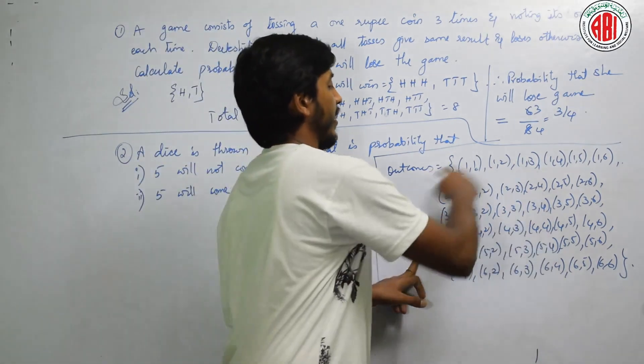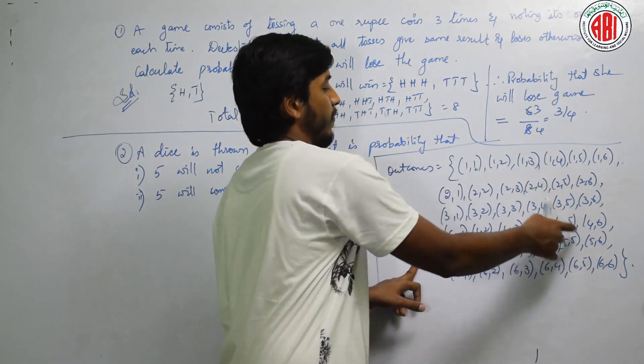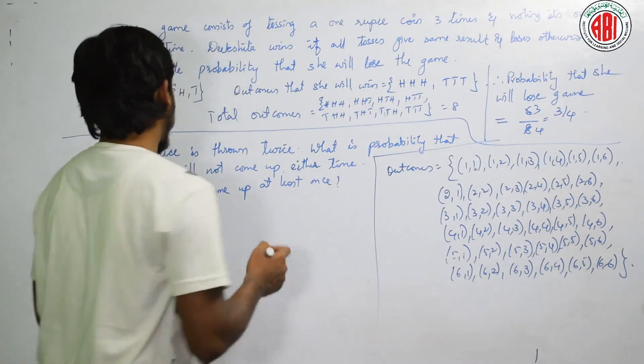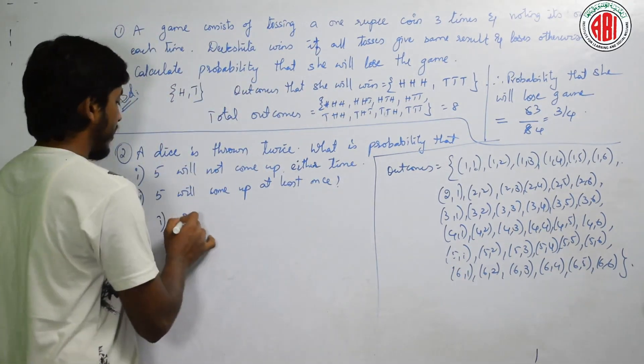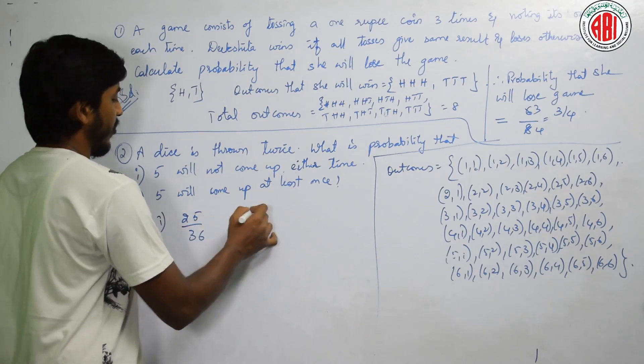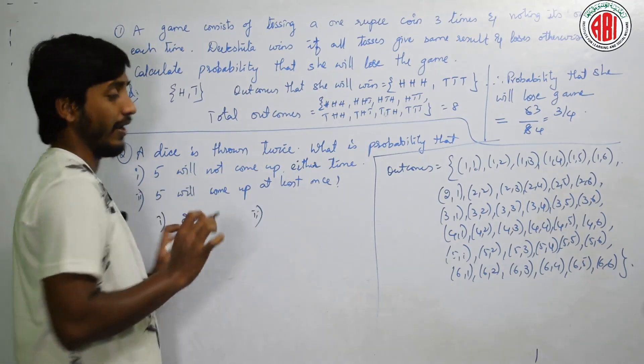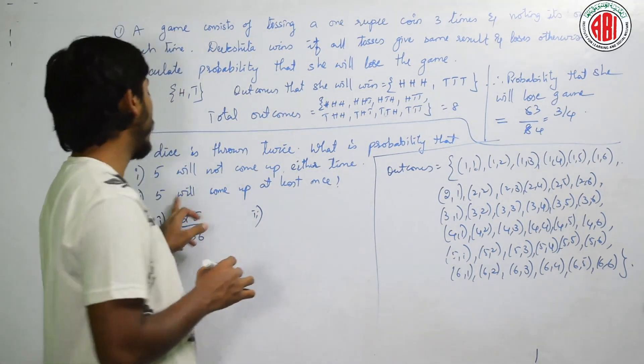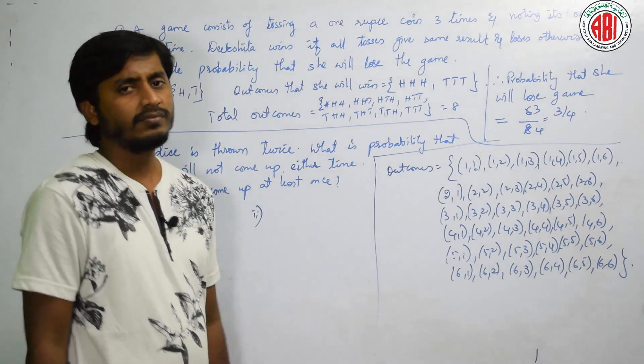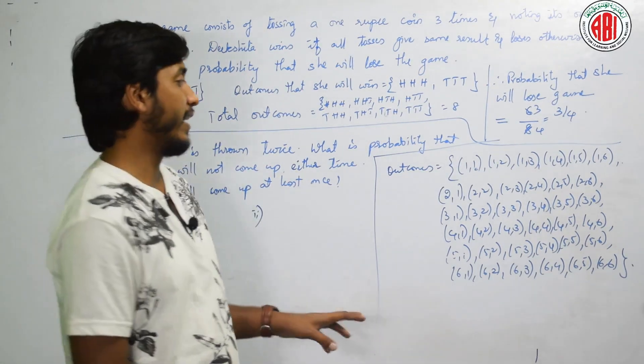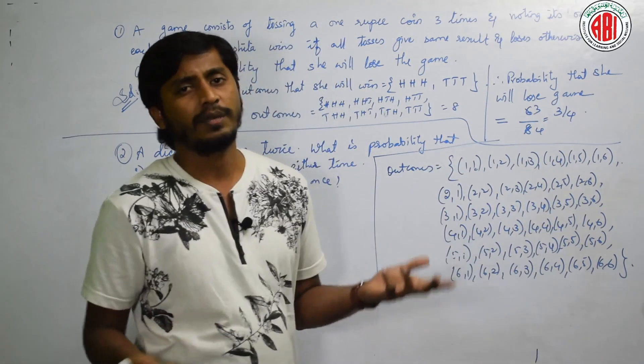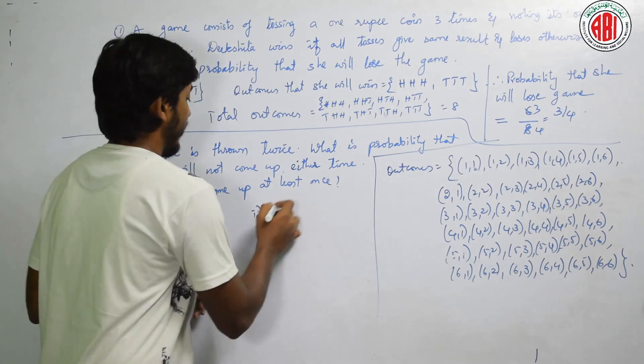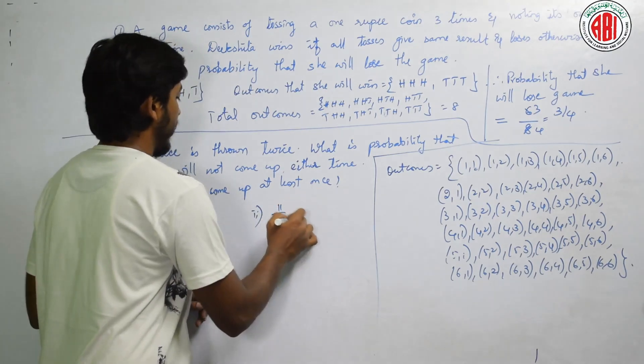Therefore, first answer is 25 by 36. If you want to cancel, if there is something to cancel, you can. There is nothing to cancel between 25 and 36. Next, 5 will come up at least once. At least once, it can come 1 time or it can also come 2 times. The remaining thing, right? That is 11 by 36. Is it right?